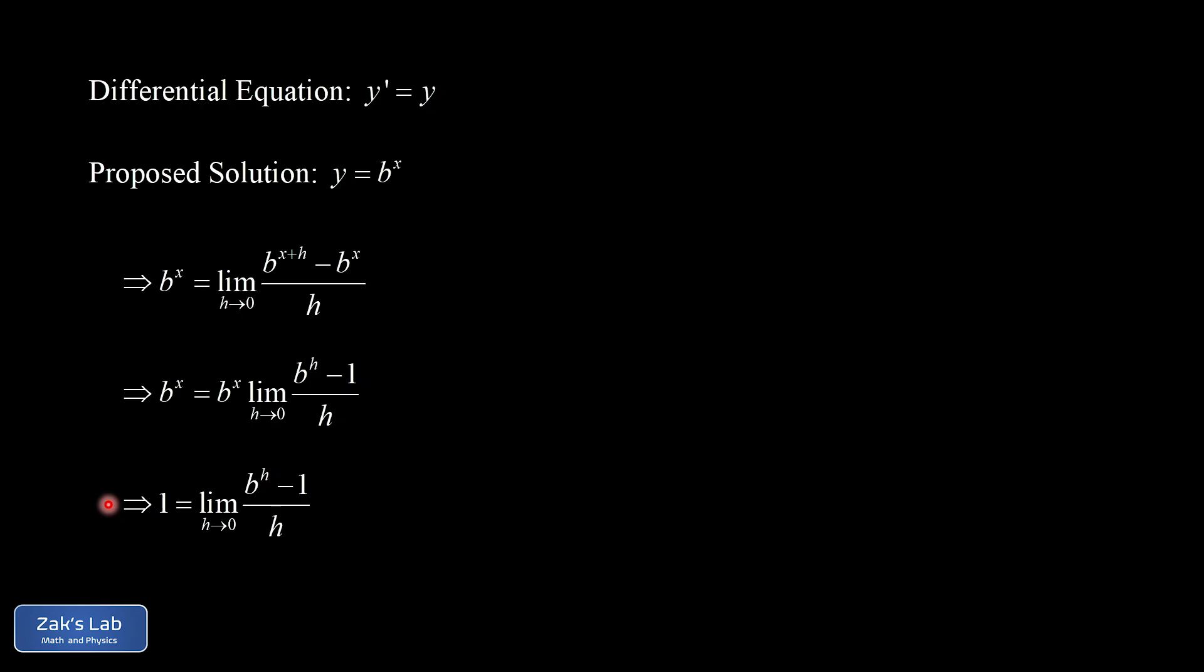And this one's a little bit tricky. We actually have to use an approximation approach to this. So what I'm going to say is, if this limit turns out to be 1, then b to the h minus 1 better be getting really close to h as h goes to 0. In other words, the inside of that limit is approaching h over h in the small h limit.